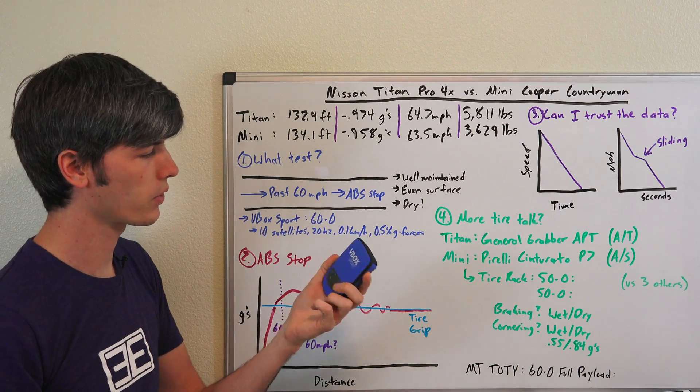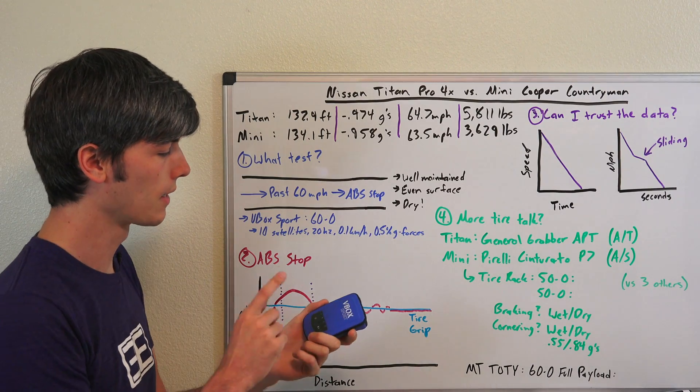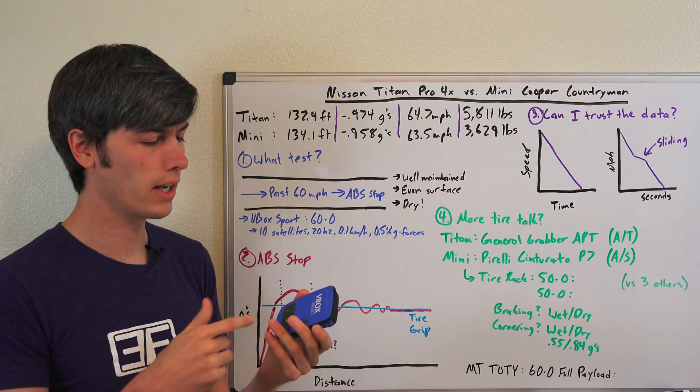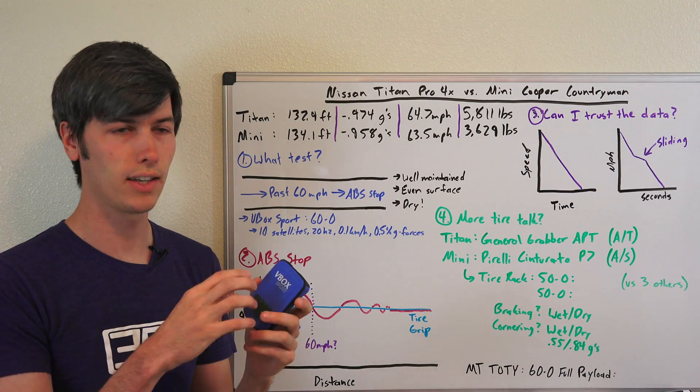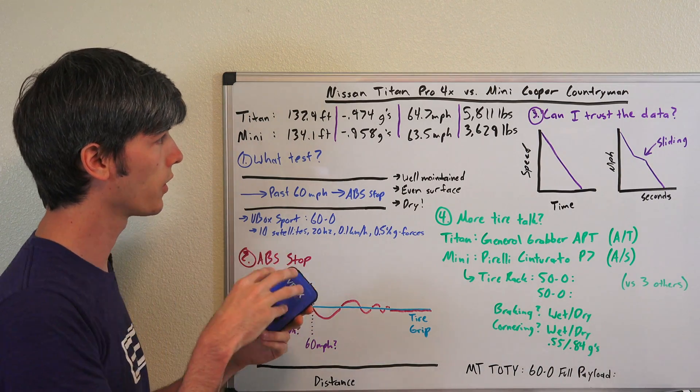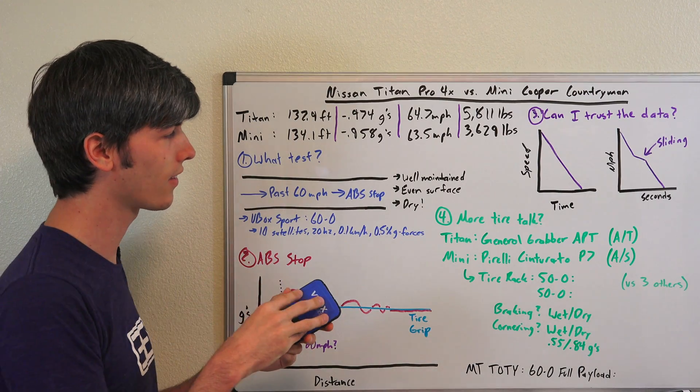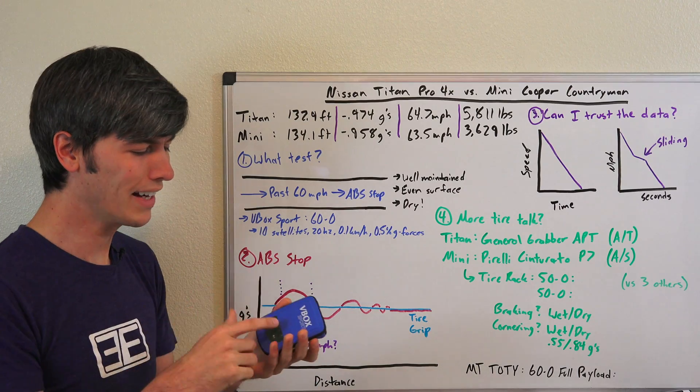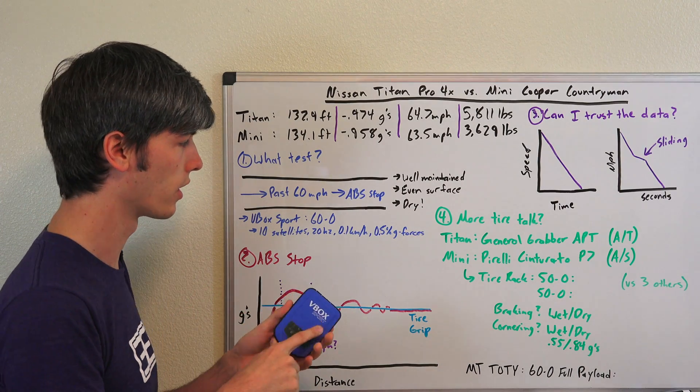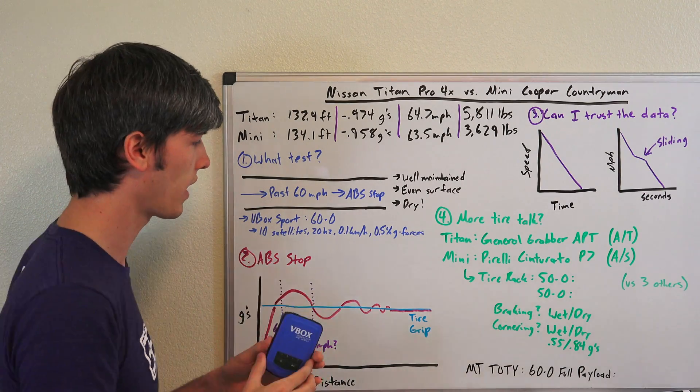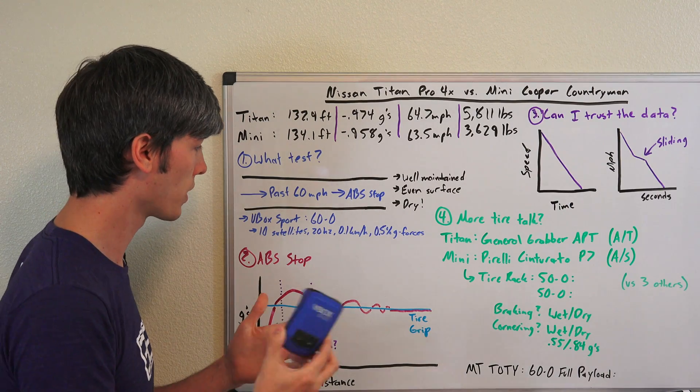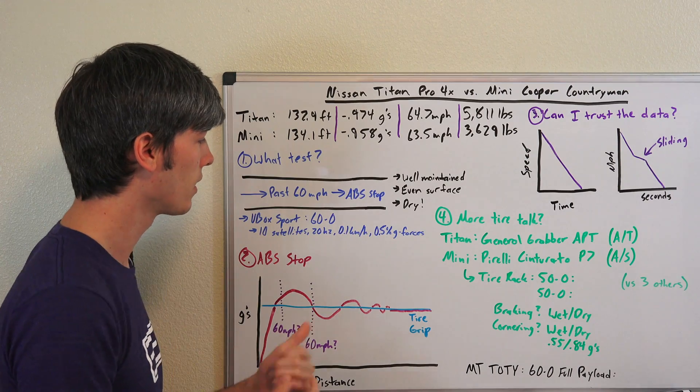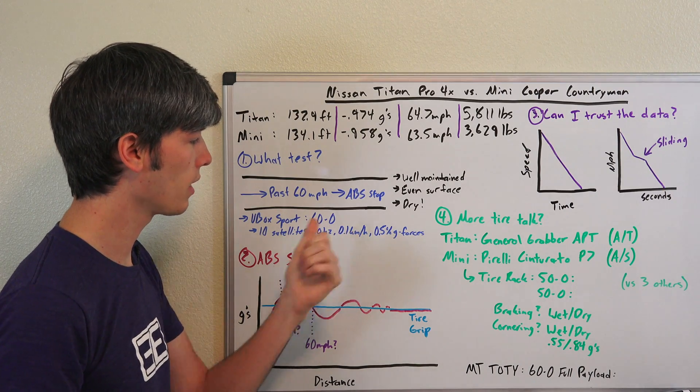Even though it's a consumer product and not the professional ones that cost 5 or 10 grand, this still uses about 10 satellites. It has a 20 Hertz GPS engine, so it's accurate to the 20th of a second, updating 20 times per second.